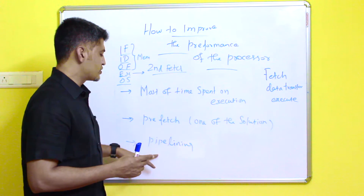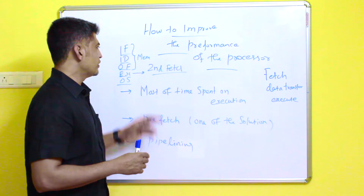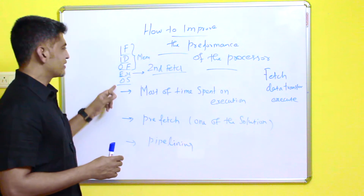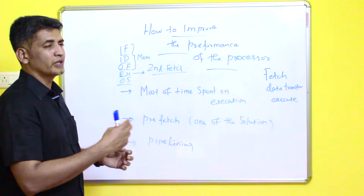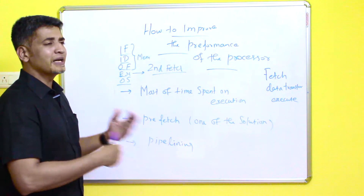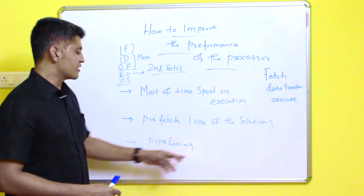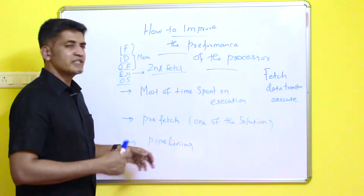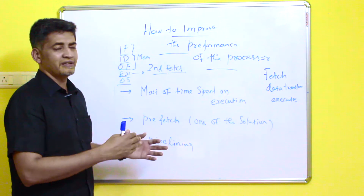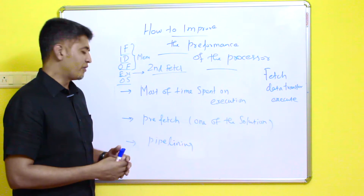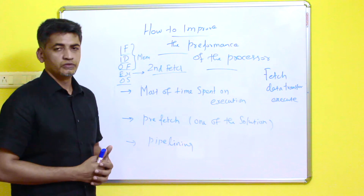The second solution is pipelining. In pipelining, you also consider the five stages of instruction execution, and you overlap the instructions. The next video will discuss the pipelining concept in detail — how the processor can achieve improved performance through pipelining. Thank you.